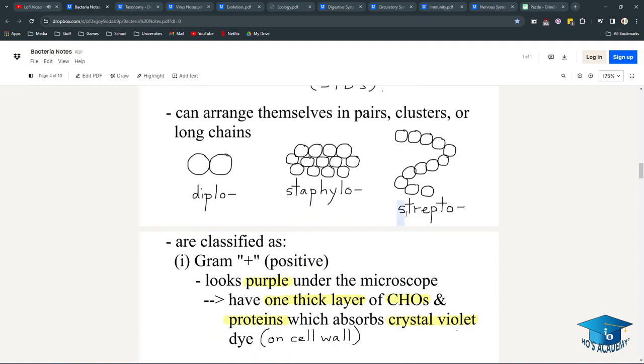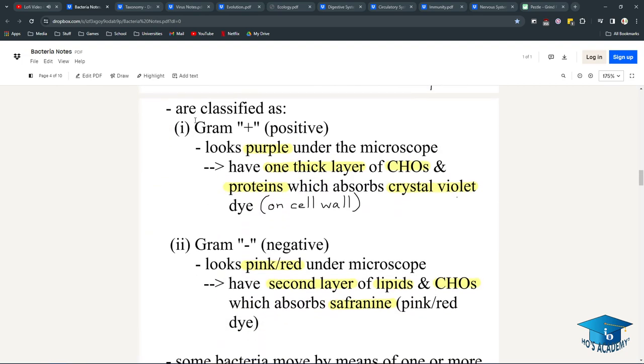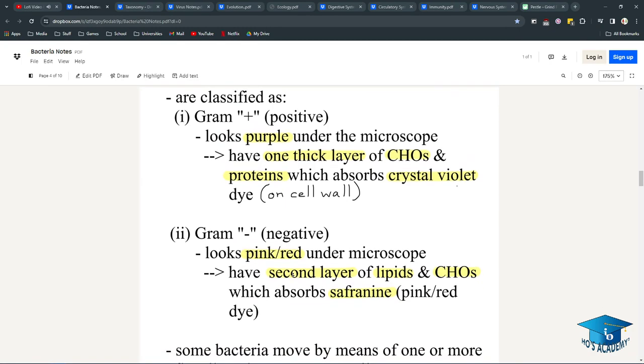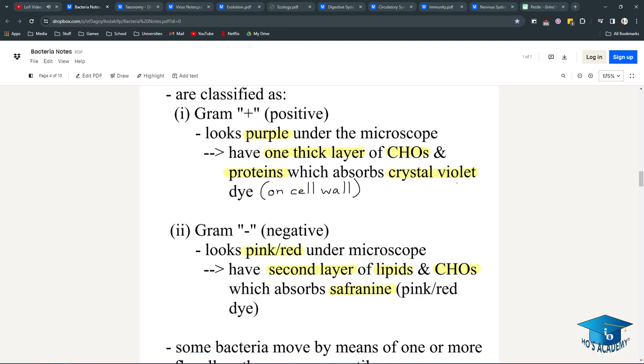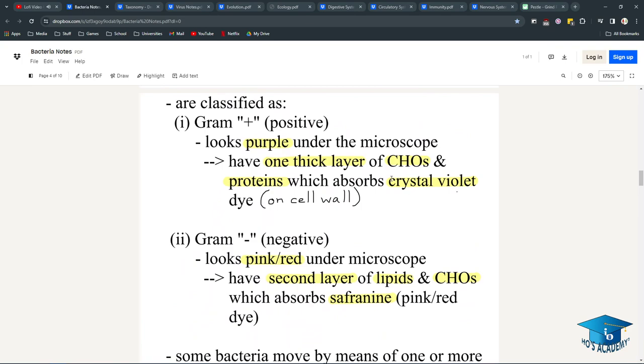They are classified as gram-positive or gram-negative, which means there's a technique called gram staining where they are stained with bacteria. Whether they have one layer or a second layer of cell walls can be determined by staining with a dye called crystal violet dye and safranine.